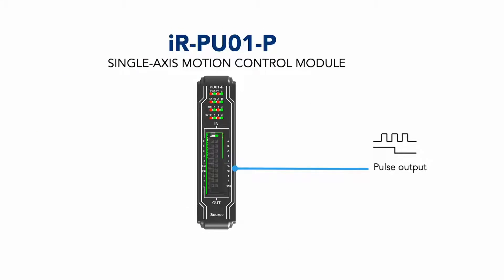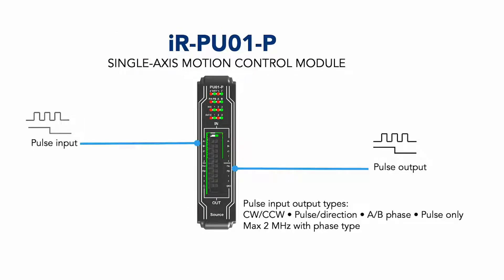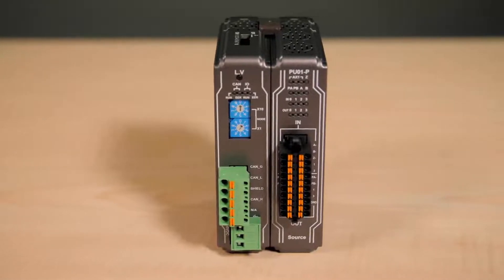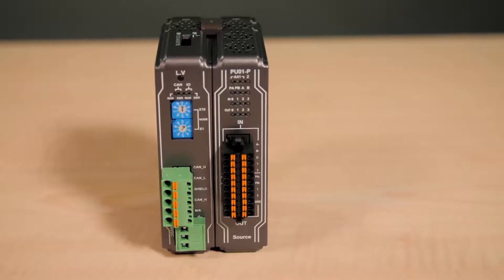The IRPU01P can output two megahertz pulses to servo and step motors. Modes include a clockwise and counterclockwise pulse, pulse and direction, and differential output.